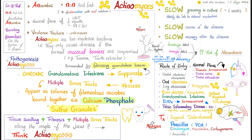Diseases that can be caused by Actinomyces include dental infections, dental abscesses, oral abscesses, lung abscesses — which can extend to the pleural cavity causing empyema — suppurative lung and pleural disease, brain abscess, encephalitis, and granulomatous infections. If a female has an intrauterine device, it can introduce Actinomyces, leading to pelvic inflammatory disease — vaginitis, cervicitis, uteritis, salpingitis.